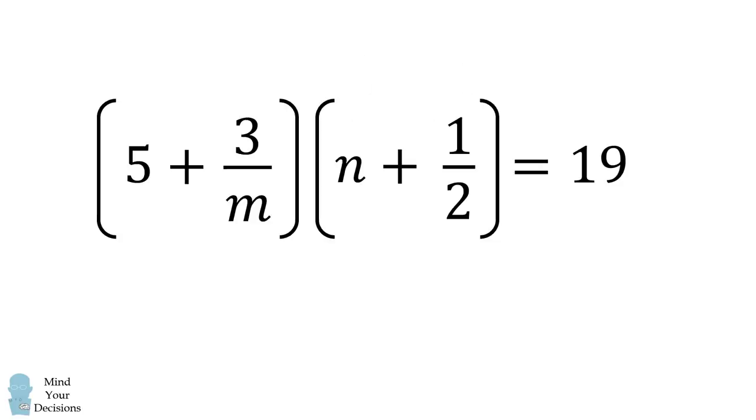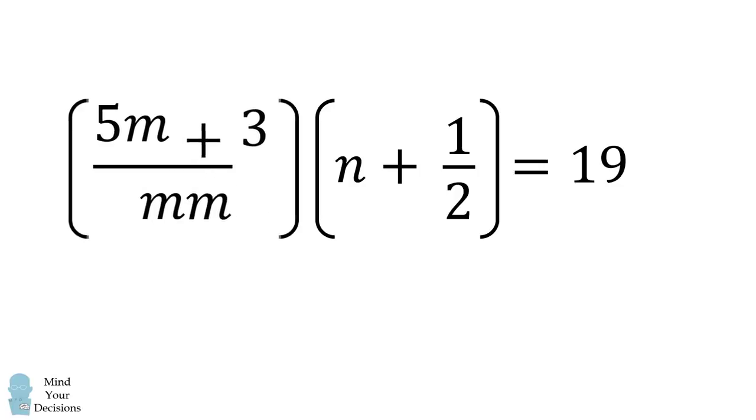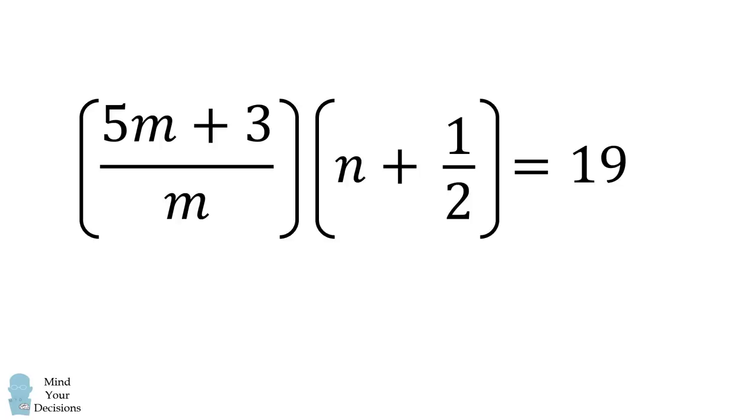Let's start with this form of the problem. We will use a trick of rewriting each term in this product. Let's rewrite the first term in this product. 5 is equal to 5m over m. Thus, the first term can be rewritten as 5m plus 3 all over m.